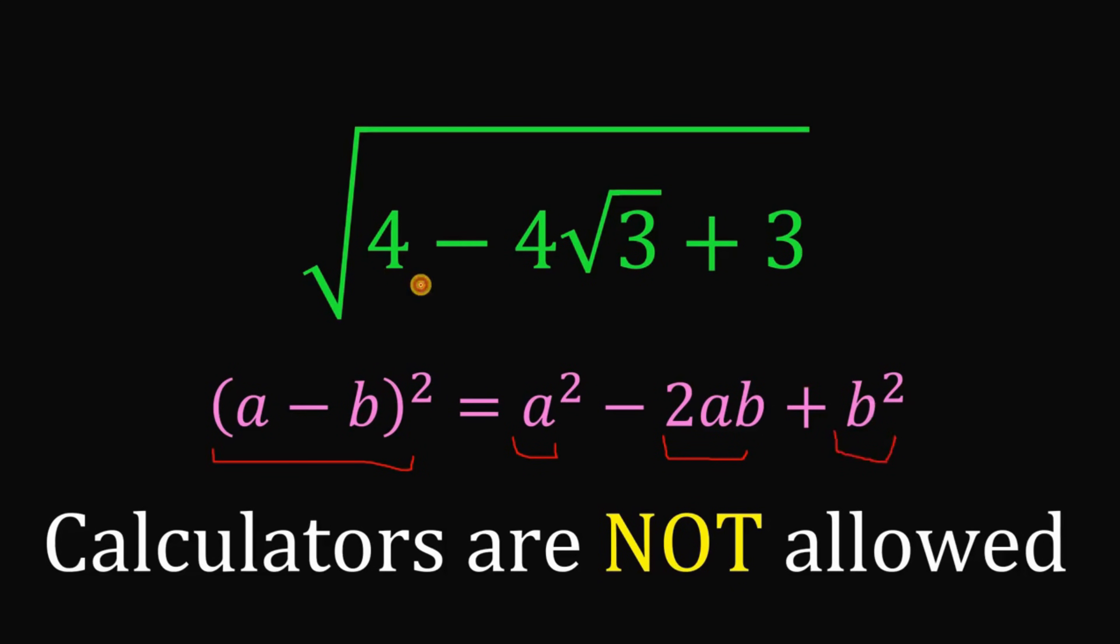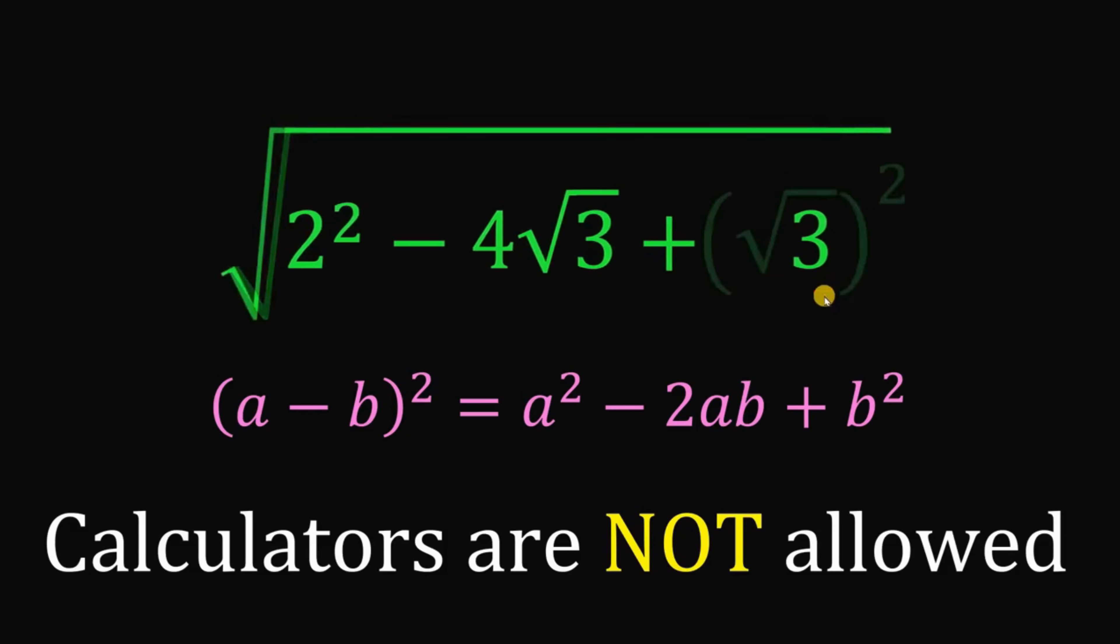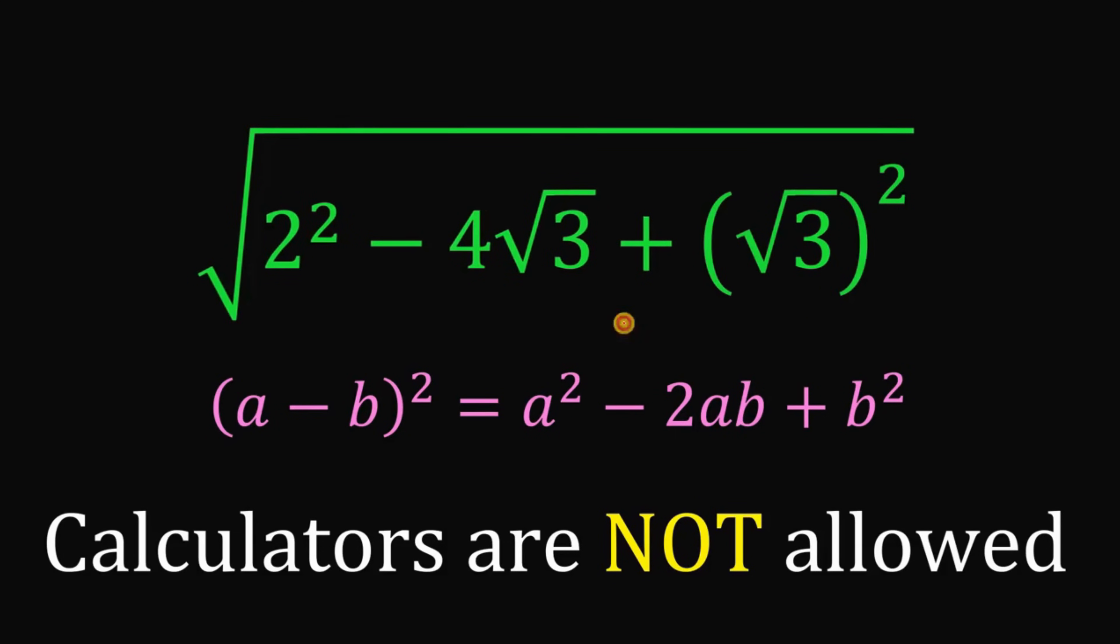Now, here comes the trick. This 4 can be written as 2 raised to the power of 2. And here it goes. This 3, to make this number a square number, we will use square root of 3 raised to the power of 2. Now, we have square root of 3, and then this 4, we can break this as 2 times 2.